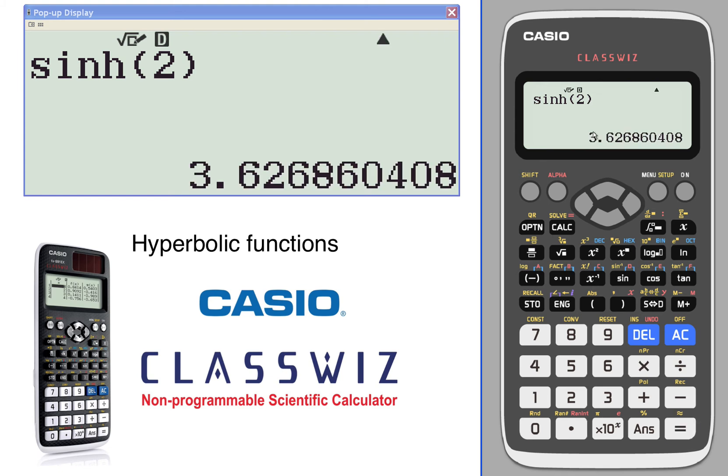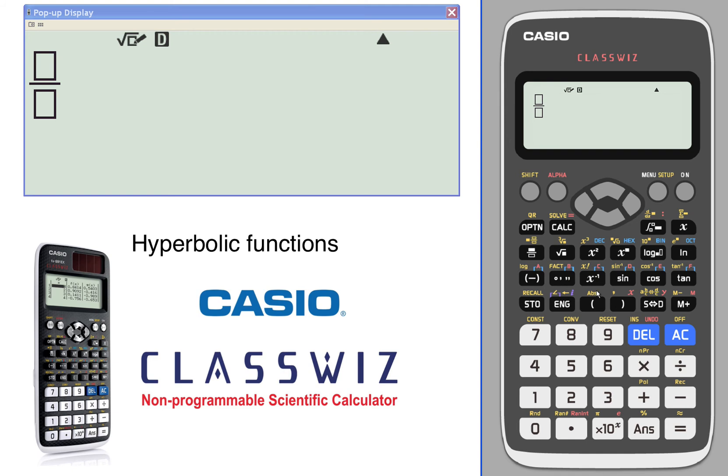Let's take a look at that same calculation long hand. We're going to take e to the x, which in this case was the second power. Find our e, shift e to the second, minus e to the negative second.